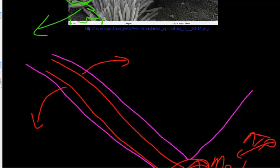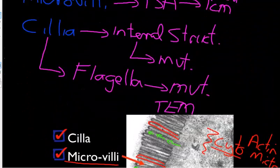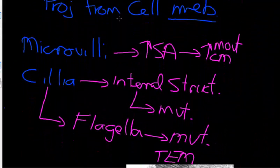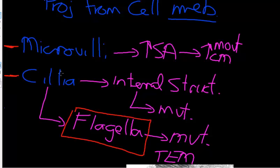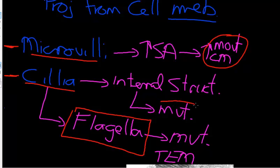So just to summarize: there are fundamentally two projections from cell membrane that we talk about — microvilli and cilia, and the very large close relation of cilia called flagella. Microvilli are small projections that increase surface area to allow greater movement across cell membrane, whereas cilia are about movement and have internal structure of microtubule to allow this to happen.